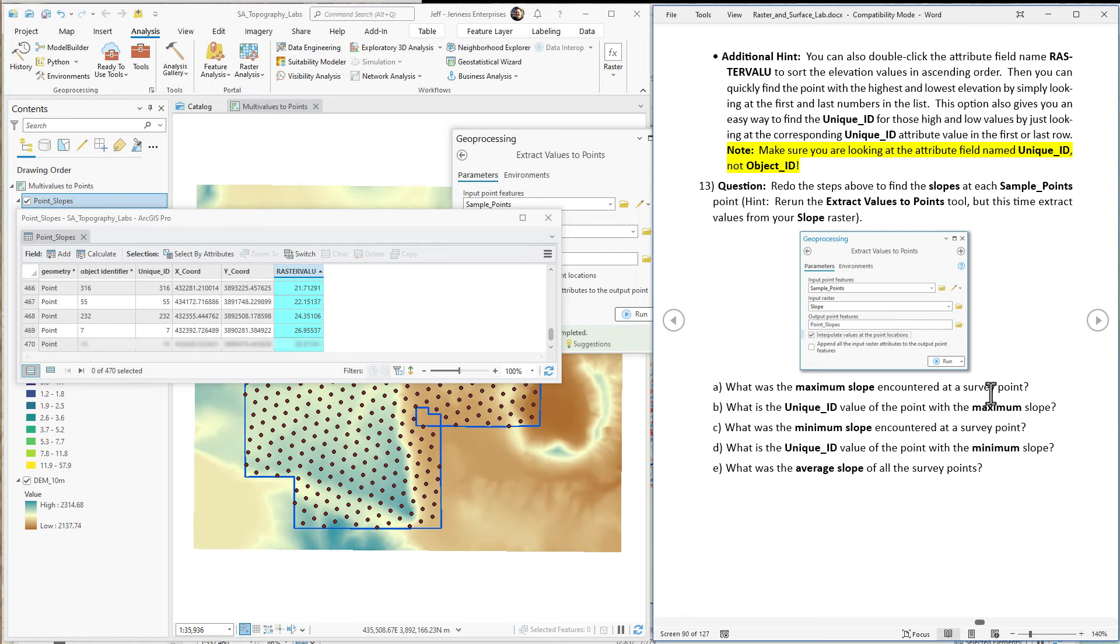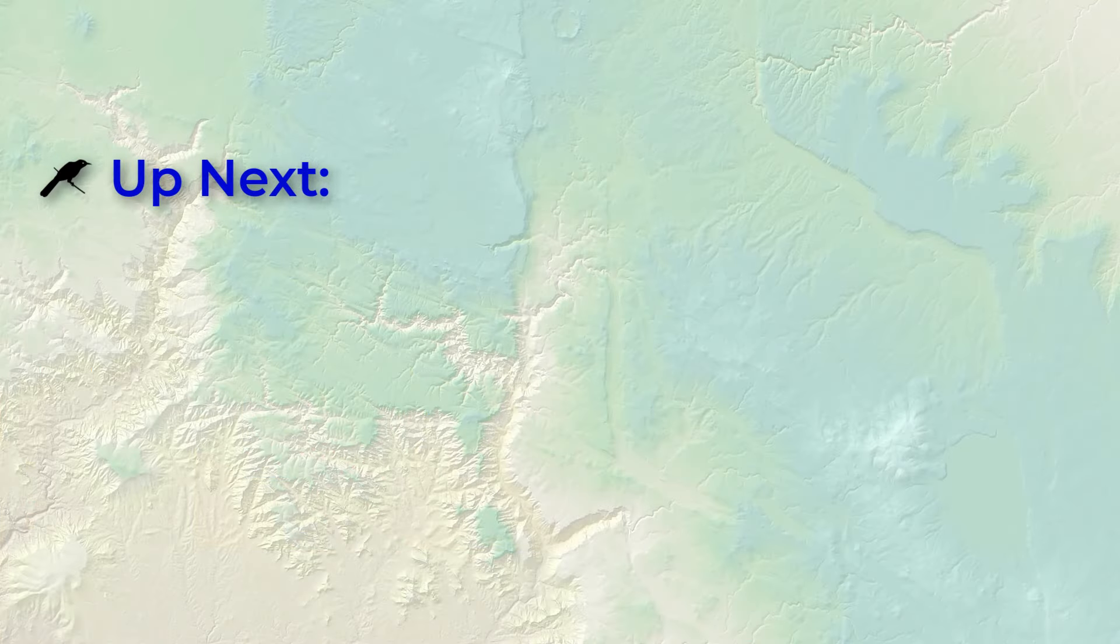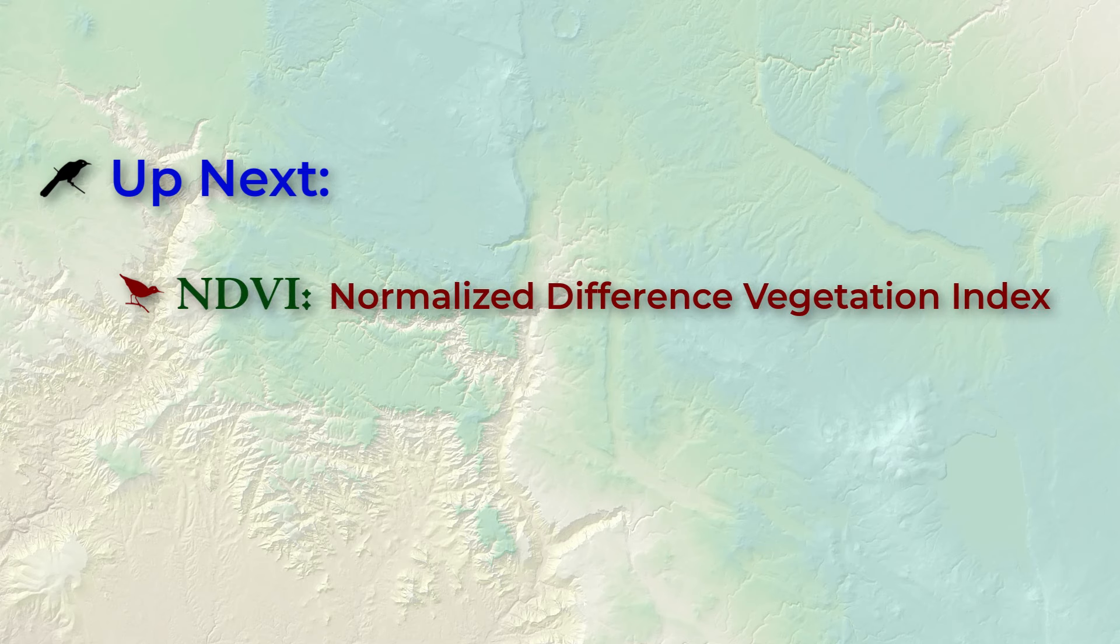All right, and that's all there is to it. So that wraps up this lab exercise. In our next lab exercise, we're going to look at some things you can do with math with raster layers.